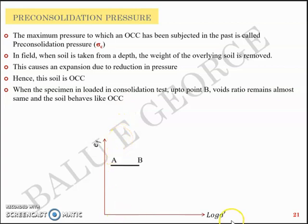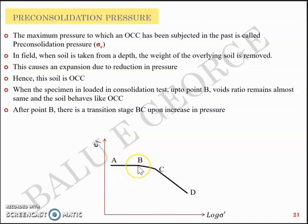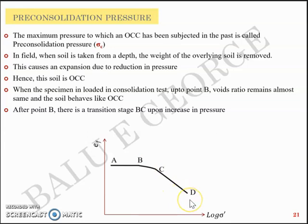Looking at the same plot of log sigma dash and e, with portions A-B, B-C, and C-D: in portion A-B, the soil behaves like an over-consolidated clay — there will not be much change in void ratio because it had already been subjected to a higher load. But as you increase the load after point B, it enters a transition stage — B-C is the transition stage. When you further increase the load, it takes the C-D portion, behaving like a normally consolidated clay. As log sigma dash increases, void ratio decreases. So C-D is NCC behavior and A-B is OCC behavior.